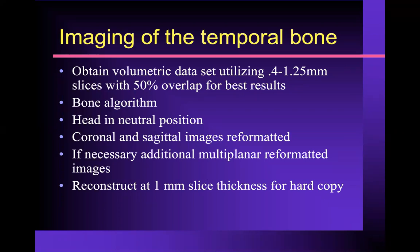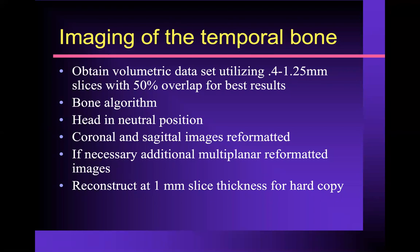Imaging the temporal bone with multi-slice CT is a piece of cake. You're going to obtain a volumetric data set. Depending on your scanner, the slice thickness may range from 0.4 to 1.25 millimeters. If the slice thickness is over a millimeter, it may require 50% overlap. But once you achieve one millimeter or less in slice thickness, you can basically do a reconstruction like a loaf of bread. Film this in a bone algorithm; the head is typically in a neutral position. From axial images, you can get coronal and sagittal images as well, and you'll want to have all three — axial, coronal, and sagittal — up at the same time to cross-reference findings. If needed, you can do additional multi-planar reformat views.